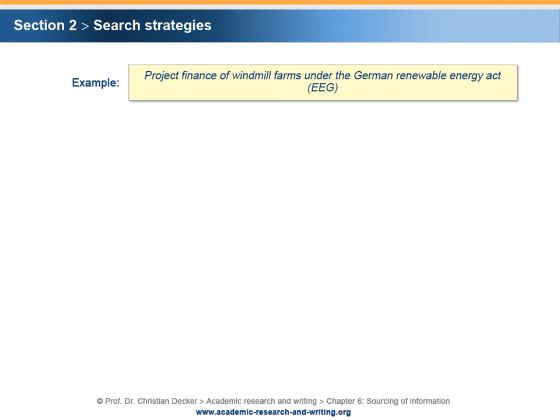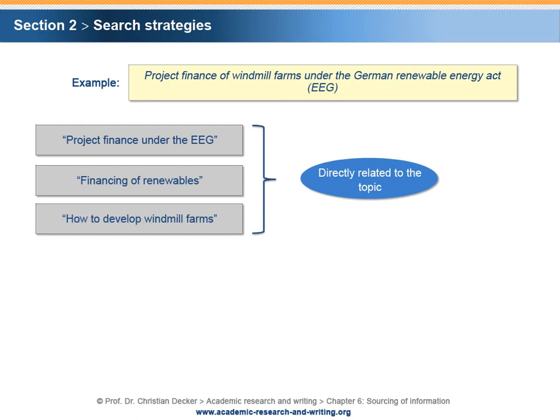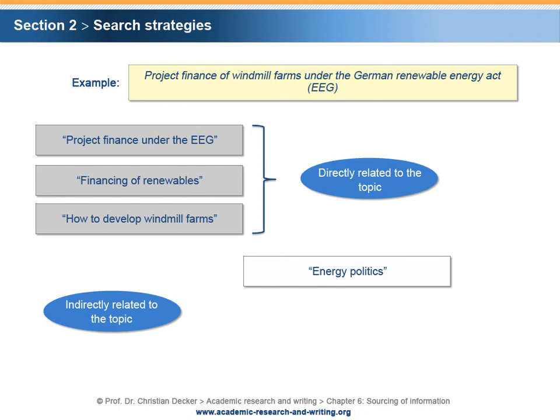In the case of new topics, there may be no literature available at first sight. One should not expect to find literature that fully covers one's topic or exactly matches the title of one's research paper project. Instead, it is necessary to use literature that has been written with respect to adjacent fields of research. This can be explained on the basis of the sample topic 'Project Finance of Windmill Farms under the German Renewable Energy Act.' There may be literature directly related to the topic, such as 'Project Finance under the EEG,' 'Financing of Renewables,' or 'How to Develop Windmill Farms.' Additionally, there may be literature indirectly related, such as 'Energy Politics,' 'Sustainable Energy: Utopia or Reality,' or 'Handbook of Energy Law.'